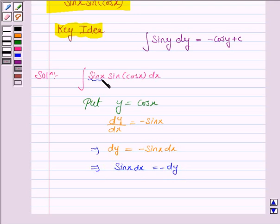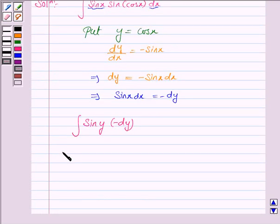So sin x dx is equal to minus dy, and cos x is equal to y. So we substitute all these values in the integral. The integral becomes sin y times minus dy, which is equal to minus integral sin y dy.